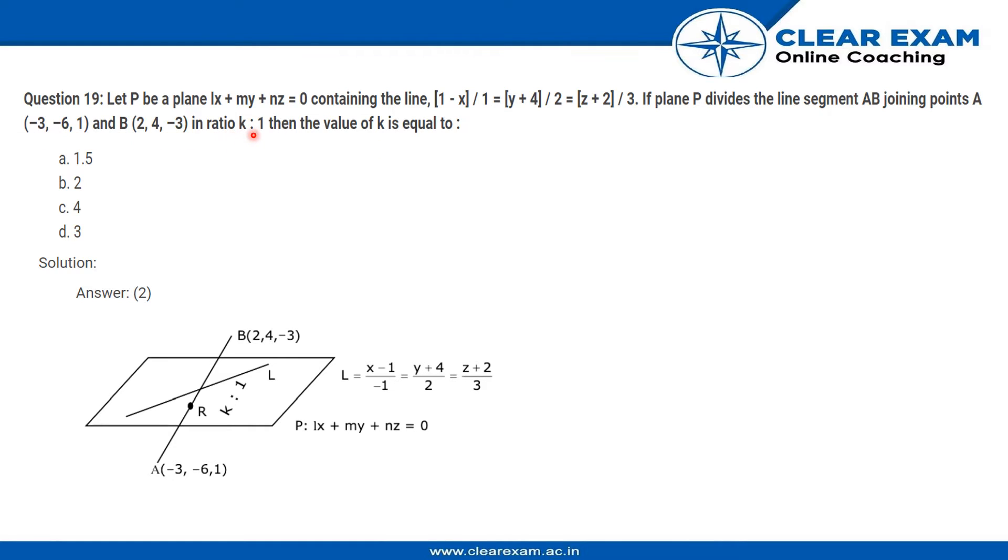into the ratio K is to 1, then the value of K is equal to - so here we have this line which is in this plane, LX plus MY plus NZ is equal to 0.